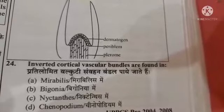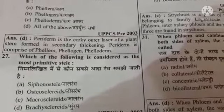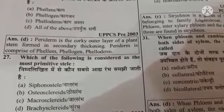Next question: periderm comprises option A phellem, option B phellogen, option C phelloderm, option D all of the above. The right answer is option D, all of the above. Next question: which of the following is considered the most primitive stele? Option A siphonostele, option B protostele, option C macrostele, option D brachystele. The right answer is option B, protostele.